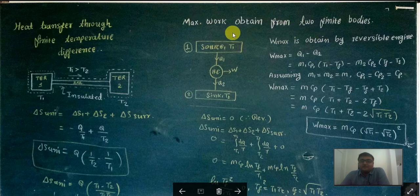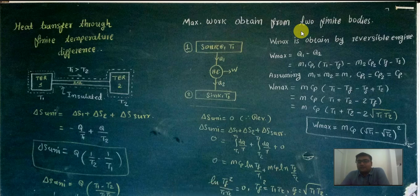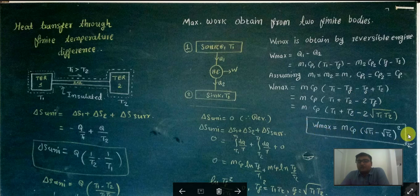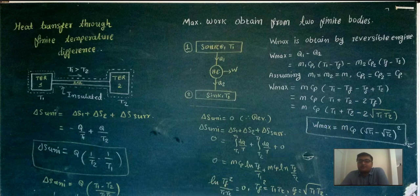So this is the maximum work obtained from two finite bodies, where one body is at a higher temperature and one body is at a lower temperature. The maximum work obtainable is given by this equation. I hope you enjoyed this video. If you have any doubt, please let me know.